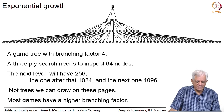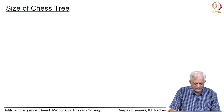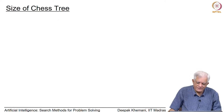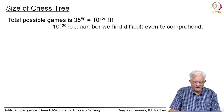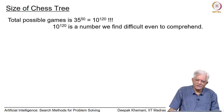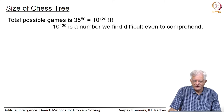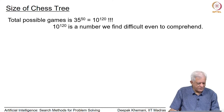Let us go back to what we said about chess: the total possible games is about 35 raised to 50, which translates to 10 raised to 120 — a number we cannot even comprehend. Our human cognition is attuned to the world around us, and numbers like 10^120 do not make too much sense.